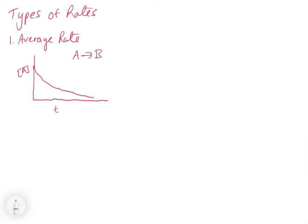In this case, A is reacting and going away to B, and we have this graph where the concentration of A is going away as a function of time. So if we want to take an average rate, we can take two points along the curve.